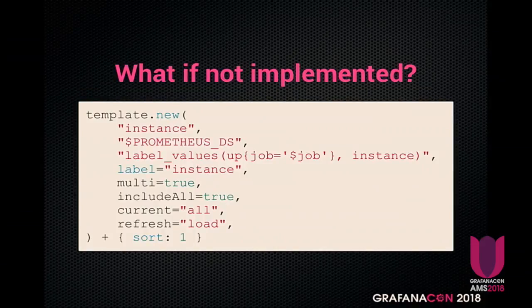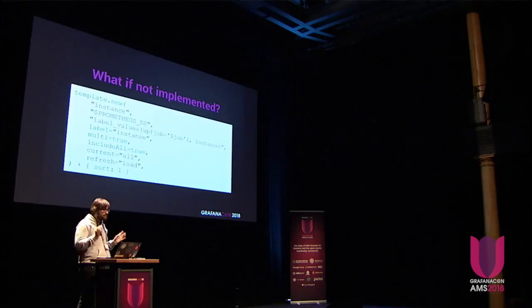The last really great thing with JSONNET is that if something is not implemented in Grafonnet, you can always just add it yourself — like 'plus sort equals one'. If the template doesn't support sorting yet, you just add the field yourself. That's also nice when using custom plugins: you can design the panel in Grafana, take the panel JSON, copy-paste it into JSONNET, and it will just work out of the box. You don't need to make a pull request first to support a specific panel that only you are using.